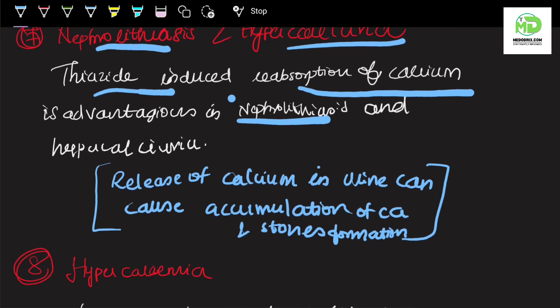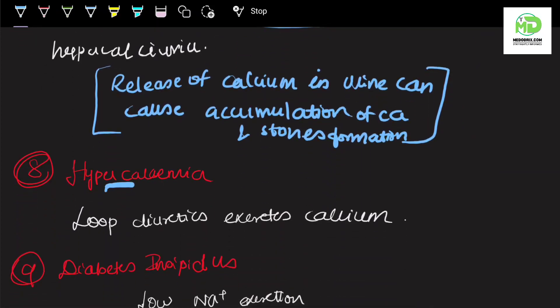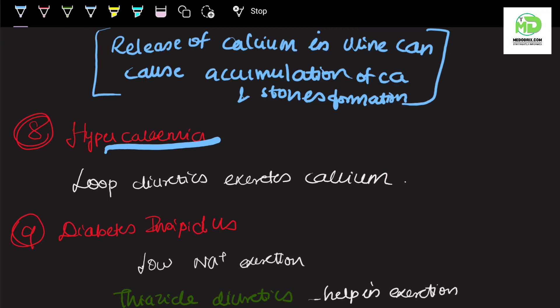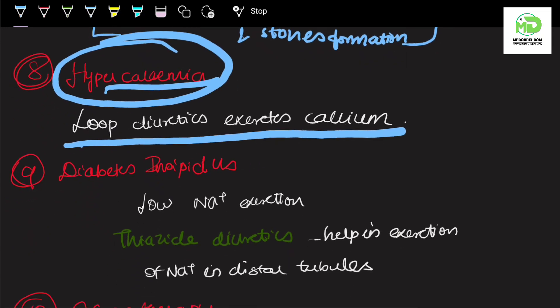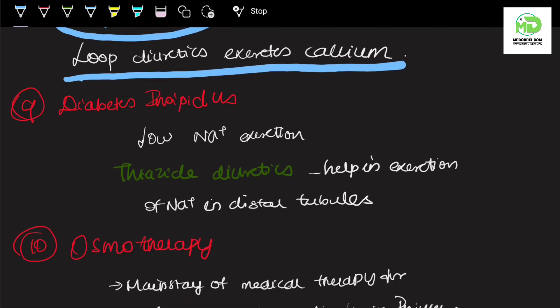Hypercalcemia is increased calcium level in the blood. Loop diuretics excrete calcium from the blood, taking calcium into the urine to be excreted. In such cases, we use loop diuretic to remove calcium from the body.